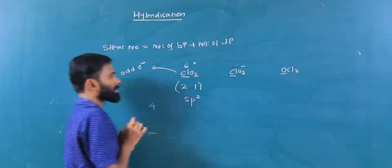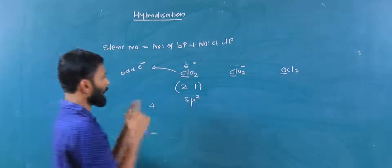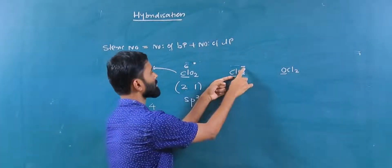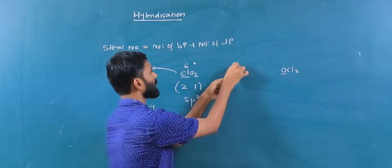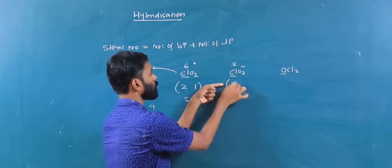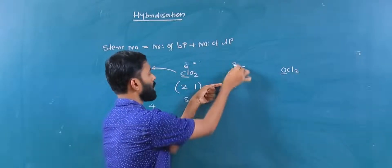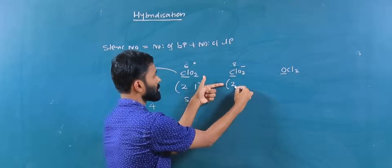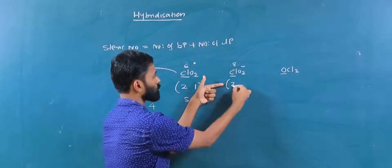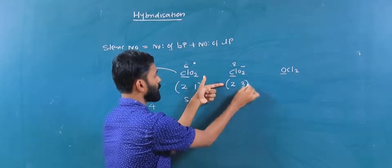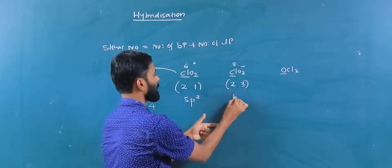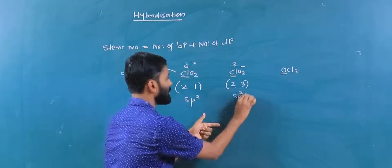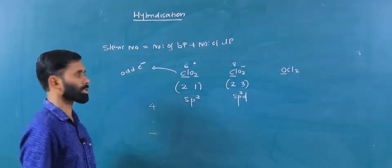For ClO2 minus — chlorine, valence electrons 7. With minus charge, total electrons are 8. Forms 2 bonds to oxygen. Calculation: 8 minus 2 equals 6, divided by 2 equals 3 lone pairs. Hybridization is SP3D.